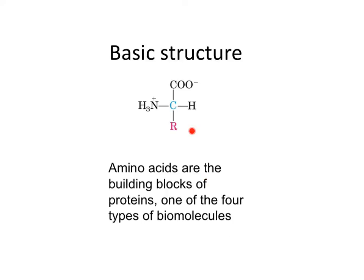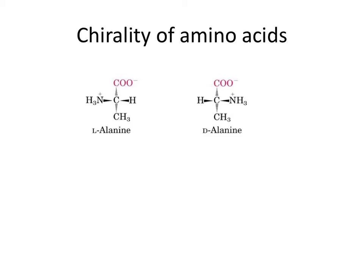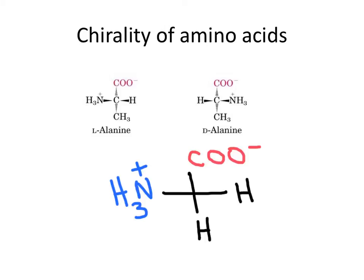20 different amino acids, 20 different R-groups, are used to make a polymer of amino acids. Because the alpha carbon is attached to four different groups, amino acids are chiral. However, there is one exception: the amino acid glycine. Glycine has two hydrogens bonded to the alpha carbon, and it is the only amino acid that is not chiral. Nature prefers the L-amino acids for protein synthesis.